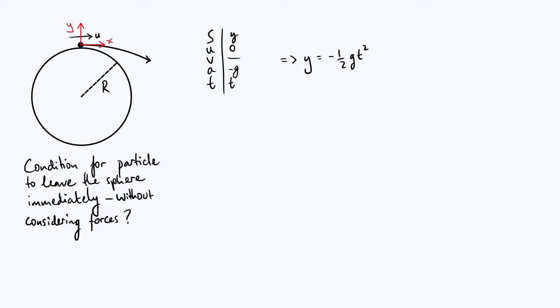What if you want y as a function of x to understand the actual shape of the trajectory? Well, in the horizontal direction, we don't even have to do suvat, because there is no horizontal acceleration, assuming that we're ignoring air resistance. So we can just do distance equals speed times time in the x direction, which is just saying that x is equal to u times t.